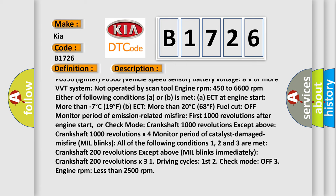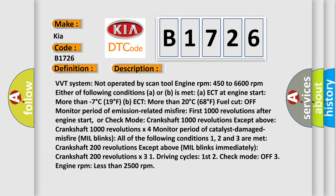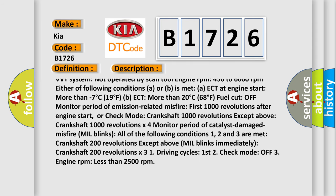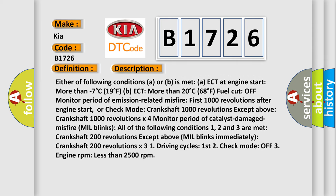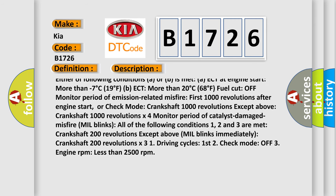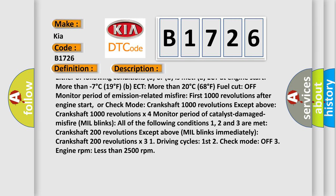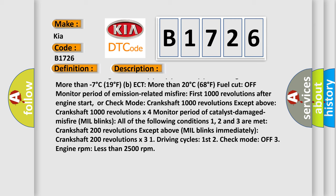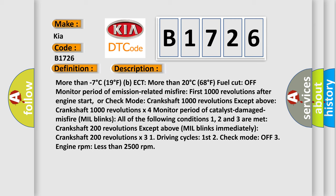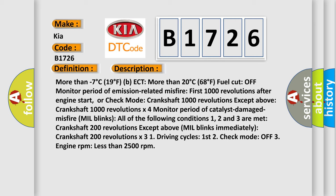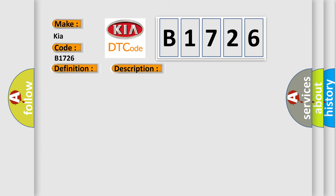Either of the following conditions must be met: ECT at engine start more than minus 7 degrees Celsius (19 degrees Fahrenheit), or ECT more than 20 degrees Celsius (68 degrees Fahrenheit). Fuel cutoff monitor period: emission-related misfire — first 1000 revolutions after engine start or check mode crankshaft 1000 revolutions; catalyst damage misfire — MIL blinks, crankshaft 200 revolutions; conditions 1, 2 and 3 met — 1 driving cycle, first 2 check mode off, 3 engine RPM less than 2500 revolutions per minute.